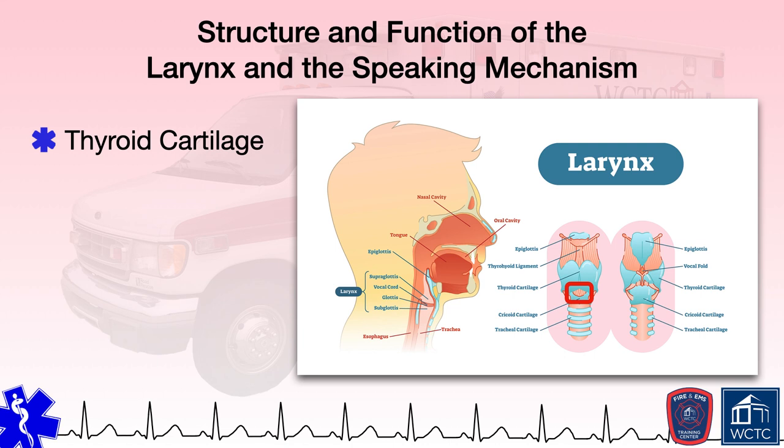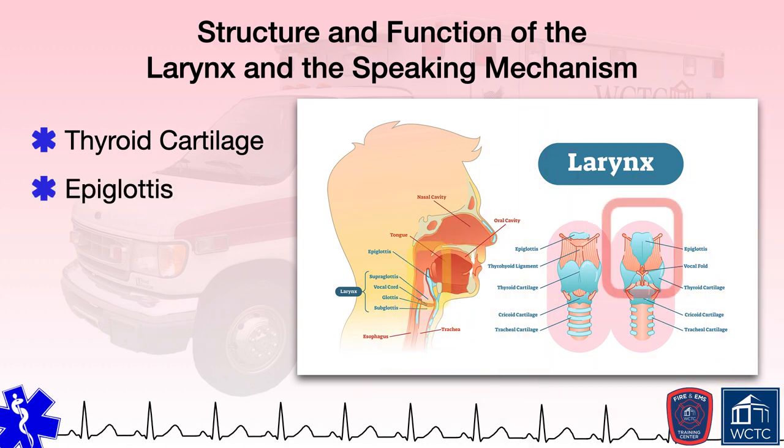The second function is to protect the airway from foreign particles, food and drink in particular. This function is facilitated by the epiglottis, which is a flap of cartilage and tissue attached to the thyroid cartilage. The epiglottis typically remains upright when at rest, allowing air to flow through the larynx between the lungs and the upper respiratory tract. When a person swallows, however, the epiglottis folds back to cover the larynx and prevent food or drink from entering the larynx and the lower respiratory tract.